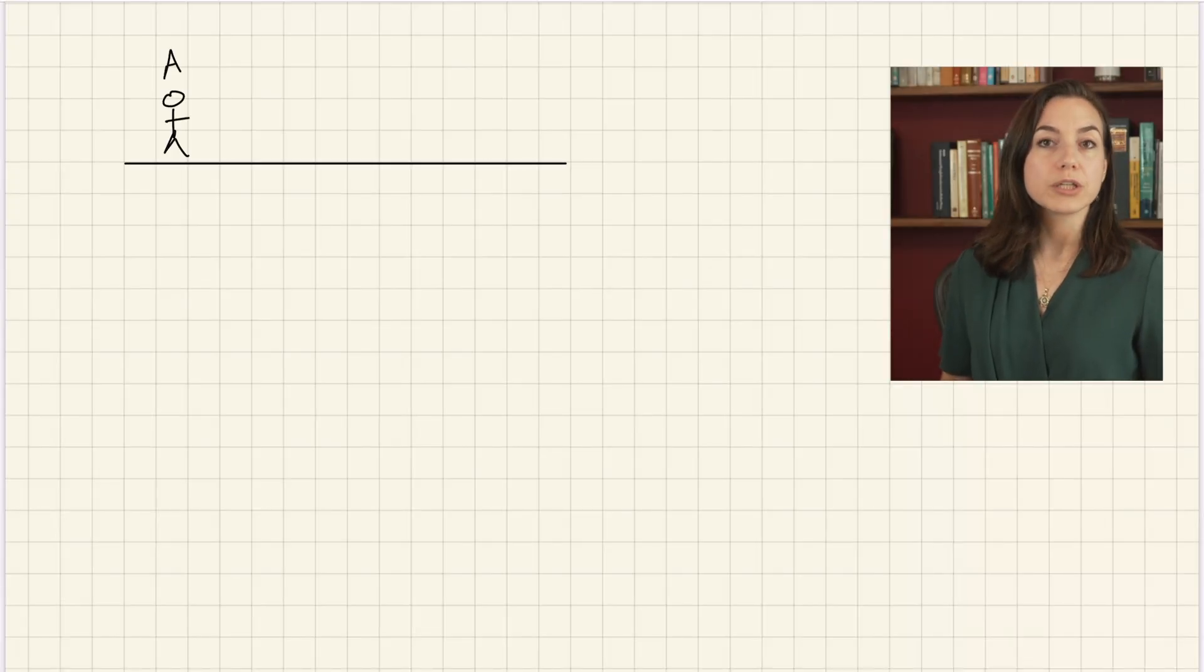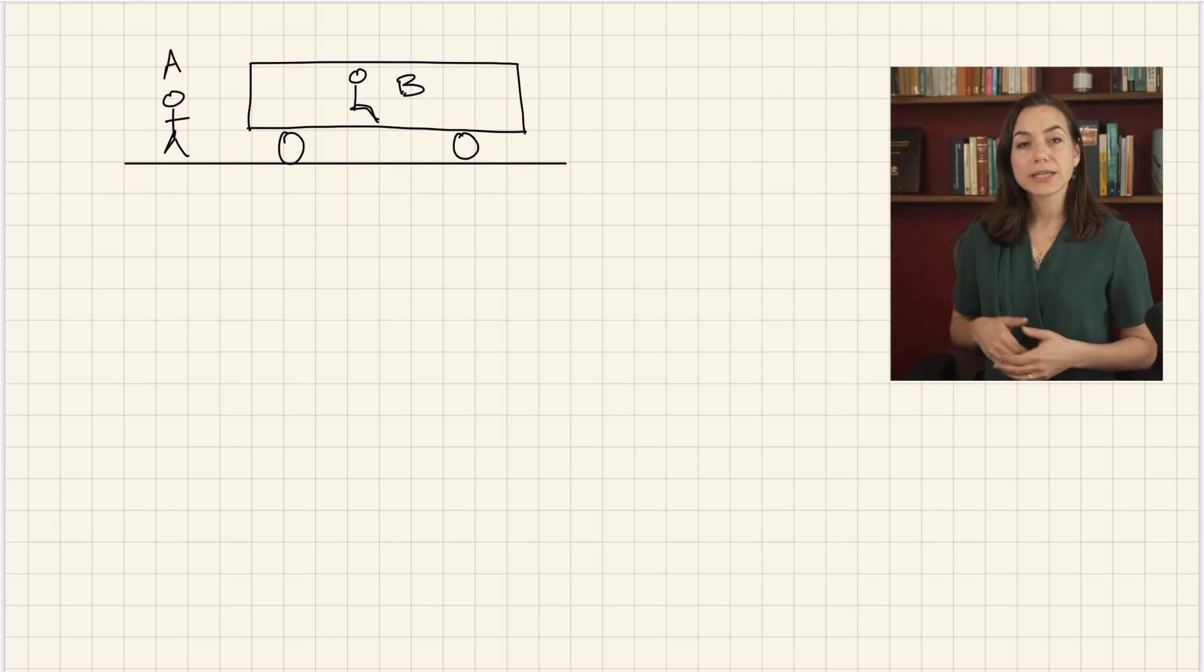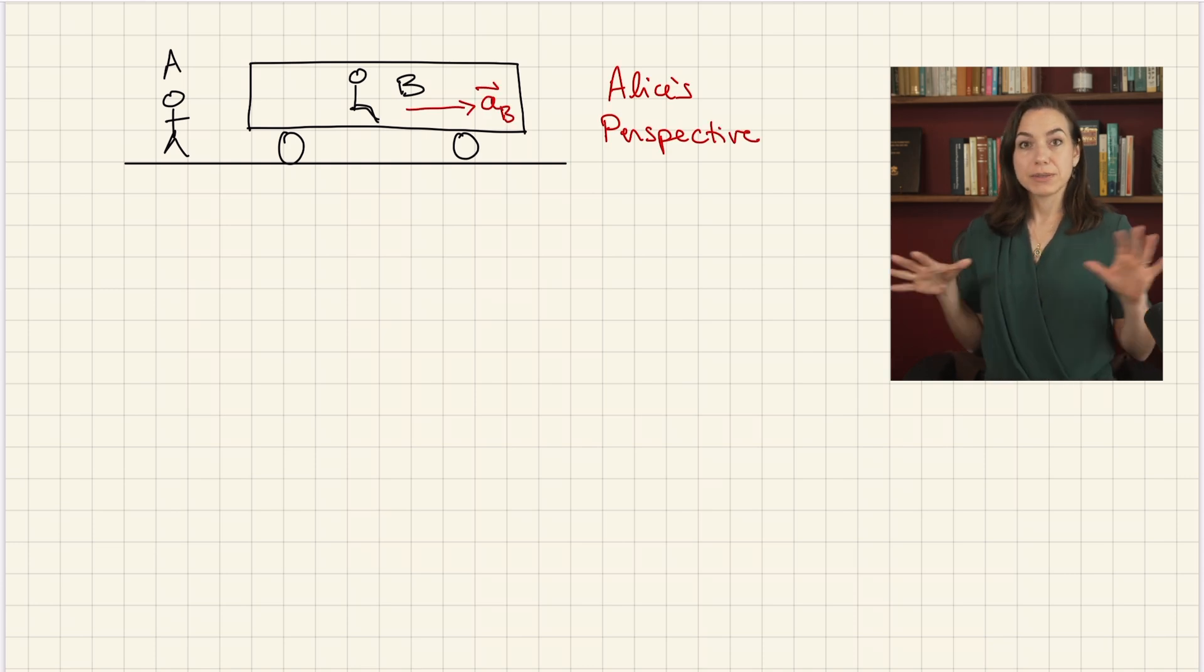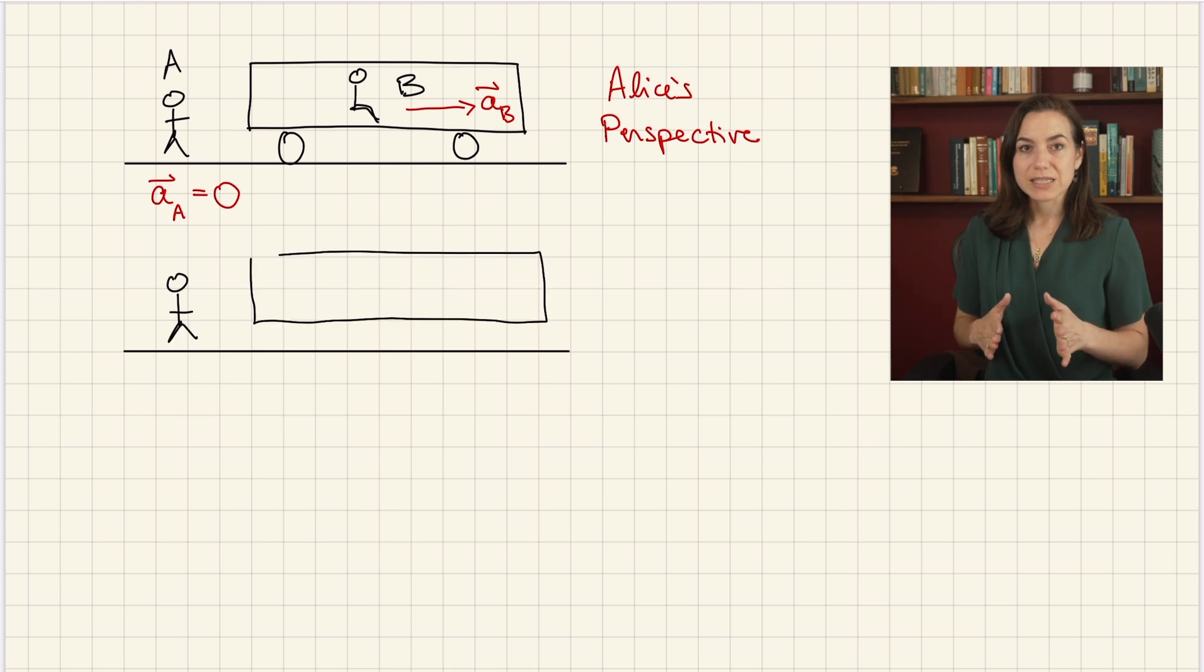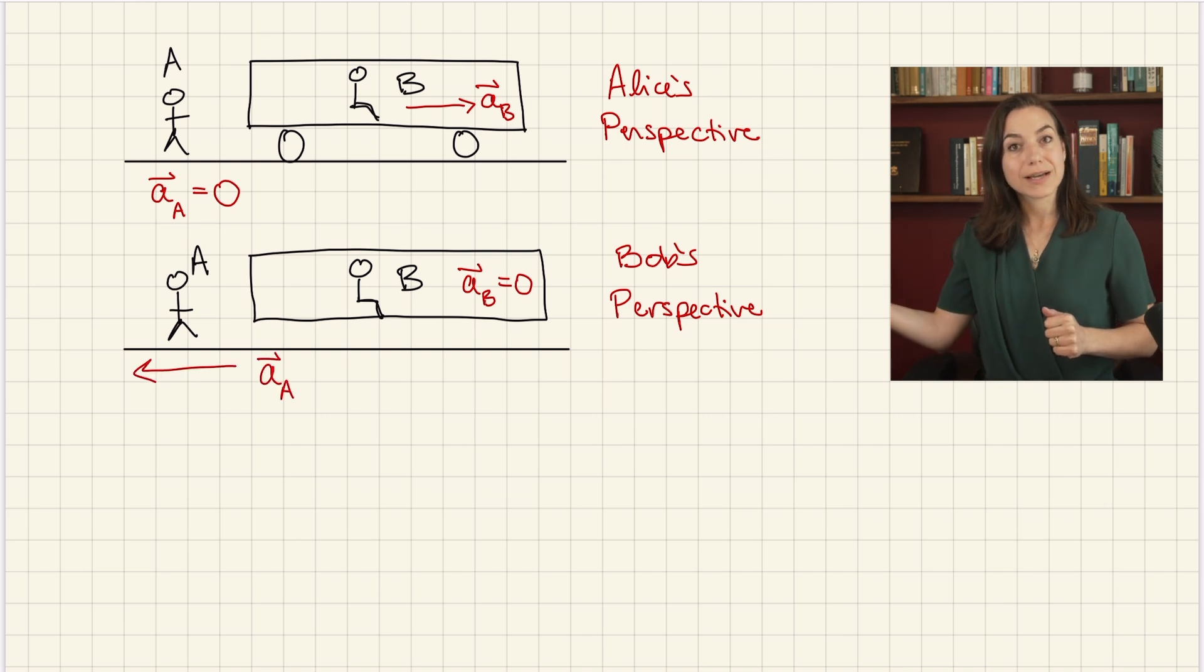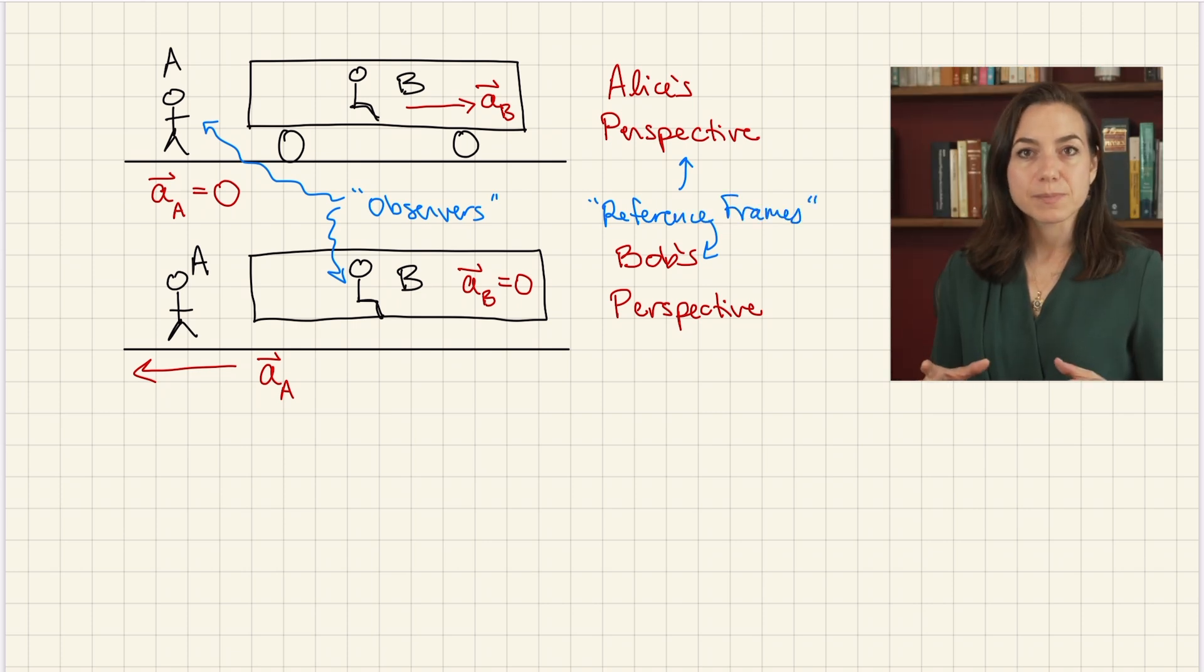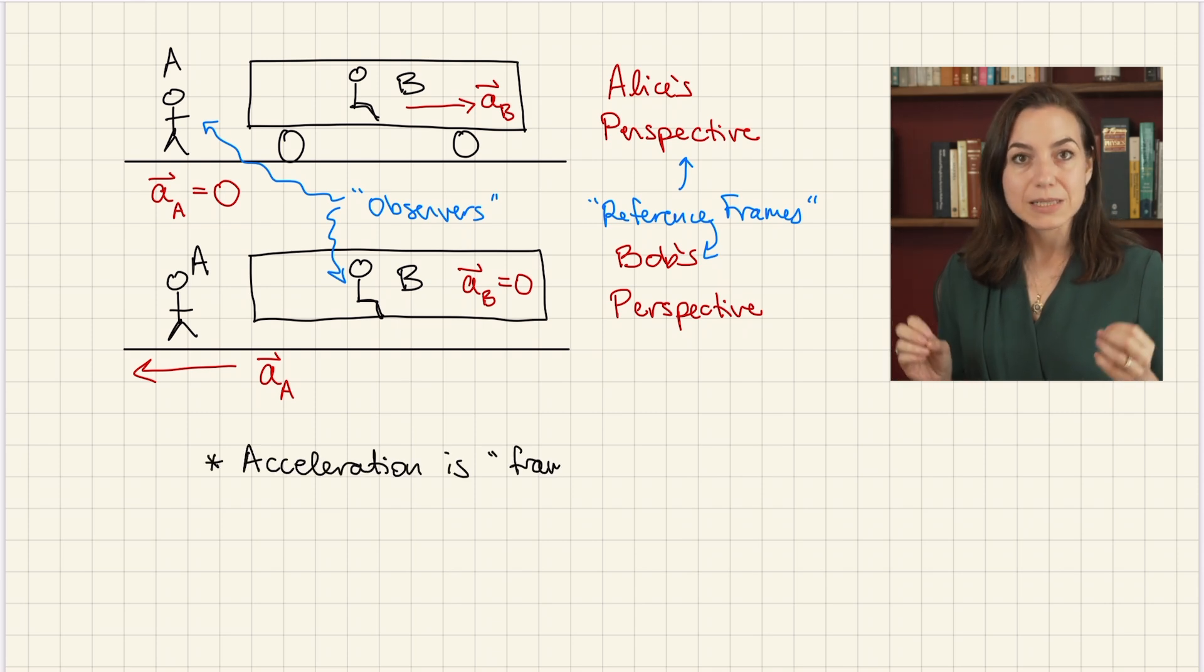For example, suppose there are two people in a train station. Alice is on the platform and Bob is sitting on the train. As the train is pulling out of the station, Alice sees the train as accelerating forwards. But she sees herself and the platform as being and remaining at rest with zero acceleration. But from Bob's perspective, he and the train remain at rest with zero acceleration, while Alice and the platform are accelerating backwards. In physics, Alice and Bob are called observers. And their relative perspectives are called reference frames, or just frames for short. So in physics speak, we say that acceleration is frame-dependent. It depends on which reference frame you're measuring it in.